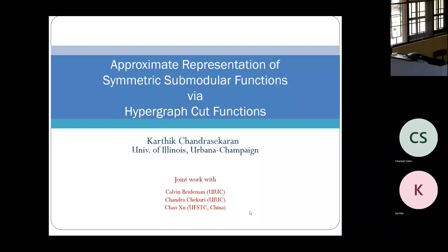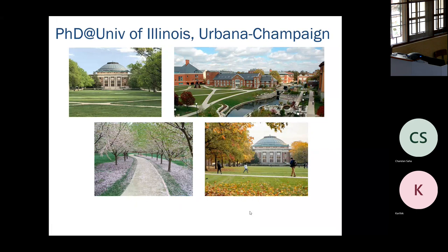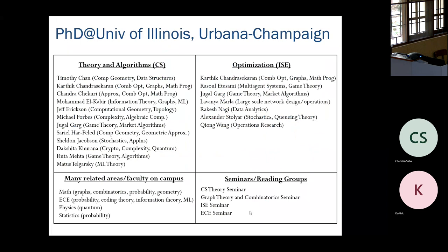Thank you for having me. Before I start the talk, I want to briefly advertise the PhD program at the University of Illinois Urbana-Champaign. It's a nice place — the summer, spring, and fall are great, the winter is cold but fine if you like snow. If your interests are in theory, algorithms, and optimization, Urbana-Champaign is strong in these areas with people in computer science and industrial engineering.